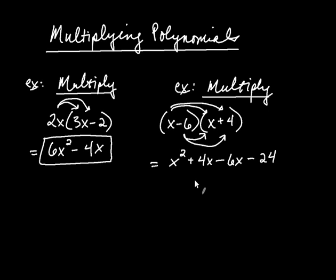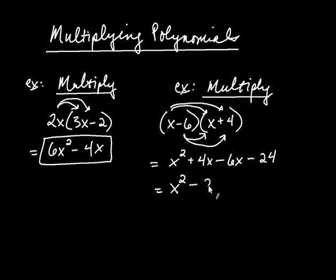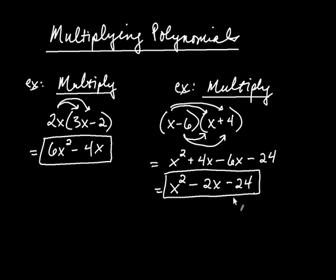We're not finished with this one because we can combine like terms. These two terms are like because they both have x raised to the first power. The x squared remains as x squared. The way you combine like terms is by adding the coefficients: positive 4 with a negative 6, so 4 minus 6 is negative 2x, which is minus 2x, and then minus 24. So we had one extra step: combine like terms.